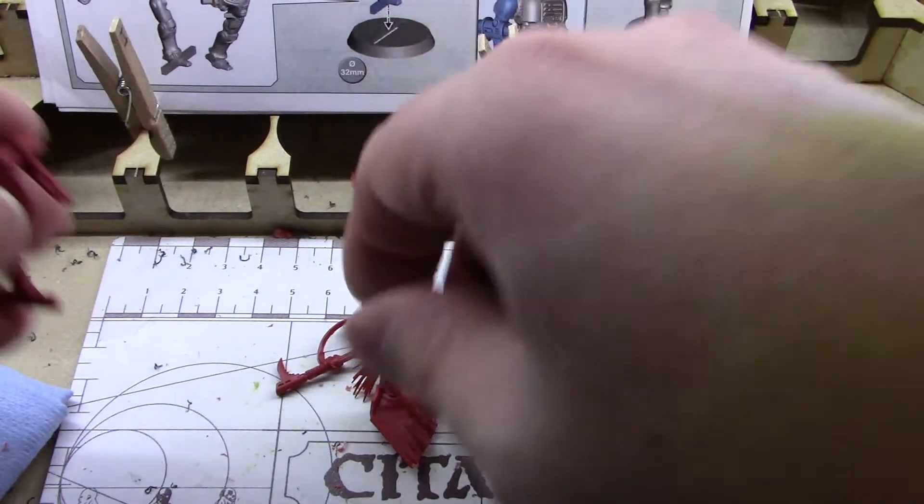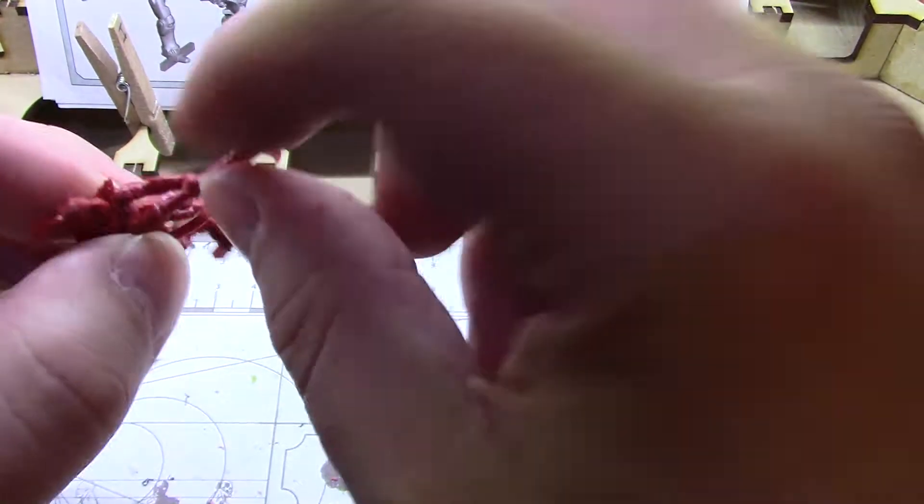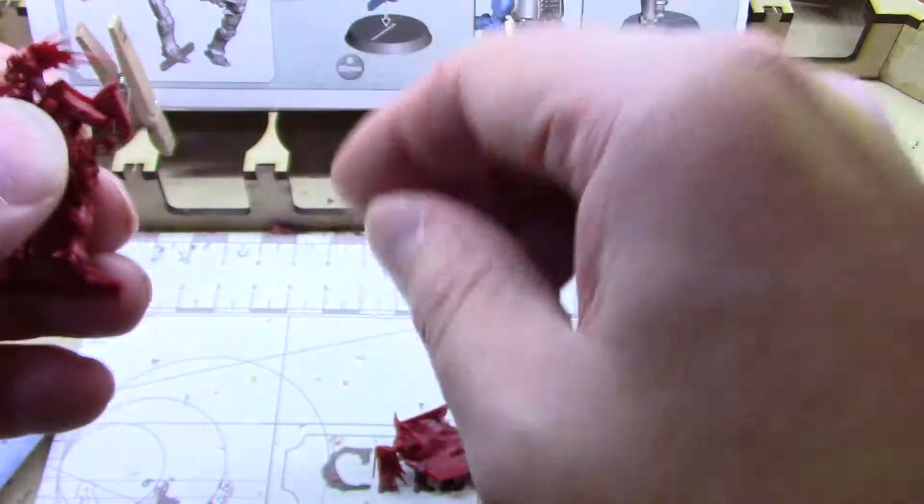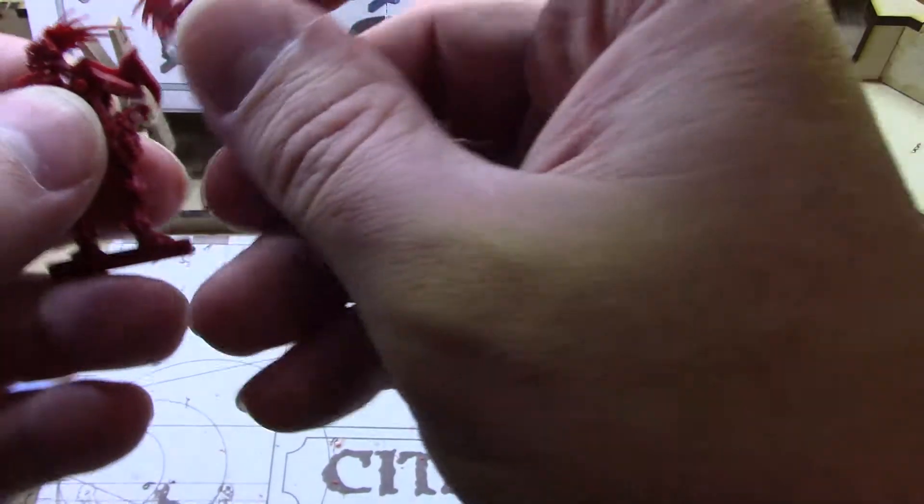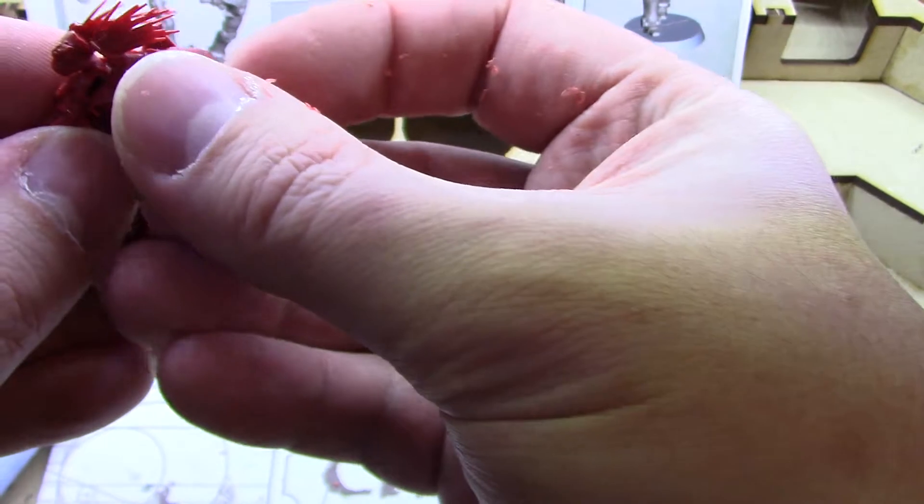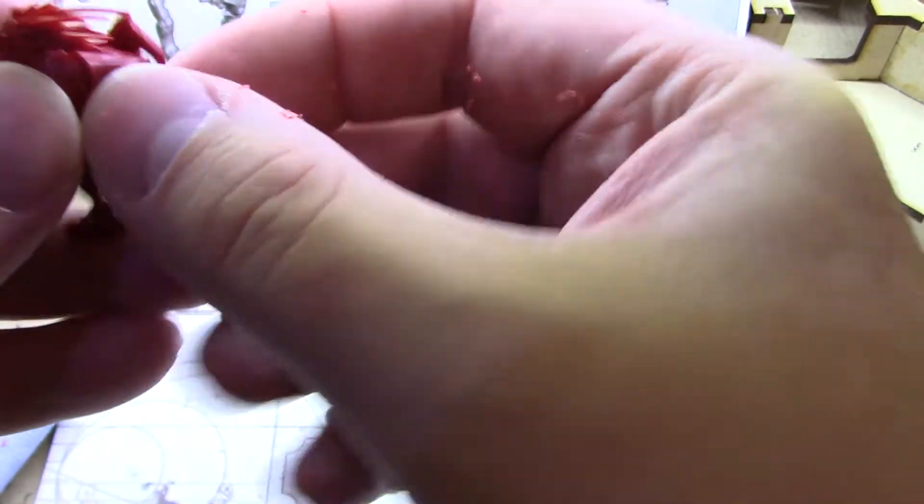So his gun goes on first, like this. We're going to line up. There's a pin here that lines up at the gun, at the hand, and it goes on there like that. Then we will take the back and we will push it all together.